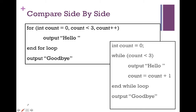Looking at a for loop and a while loop side by side, they have the same pieces. The for loop has a loop control variable declared and initialized to zero inside its header. In the while loop, the loop control variable is declared and initialized outside the loop. Both have a condition to check — in the for loop, it's inside the parentheses; in the while loop, it follows the while keyword.